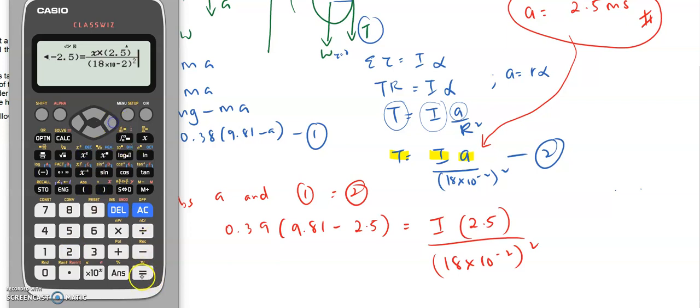Shift equals, so x unknown times, this one we can use because this is over. So x unknown times 2.5. I divide by 18 power of negative 2 squared. I cannot put equal here because this is not the answer. You're gonna shift solve. This is not the final answer, you're gonna press again.